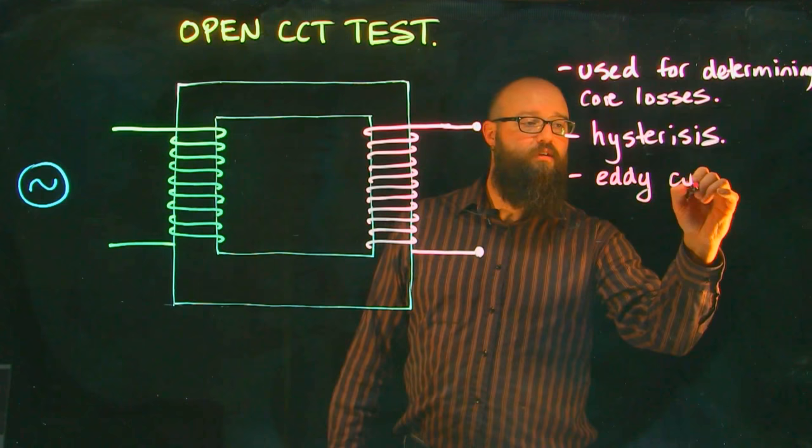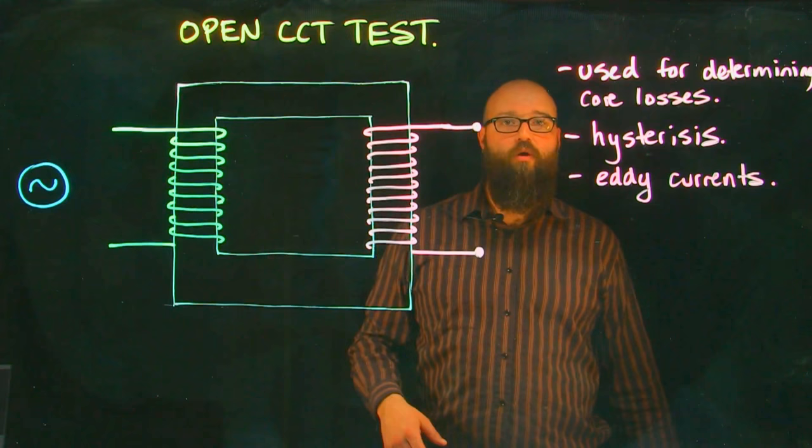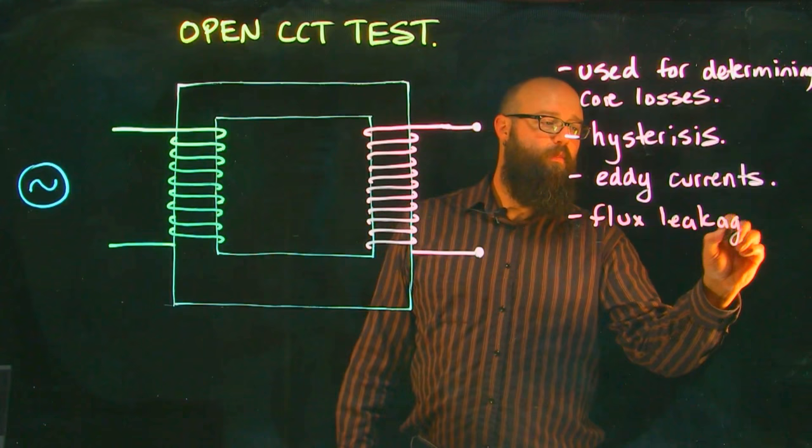We have our little circulating eddy currents which build up because we have a magnetic field interacting with a conductive core, and we also have our flux leakage losses.